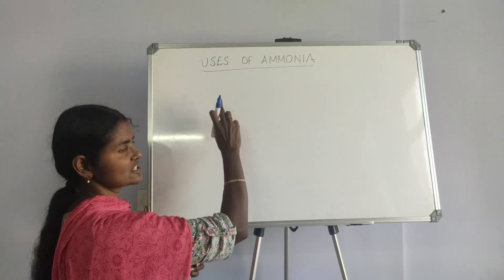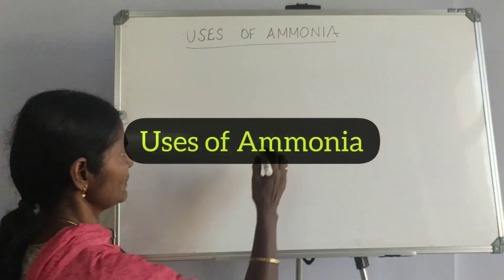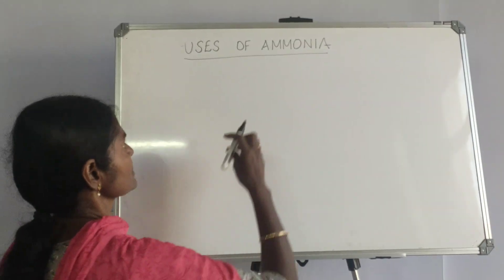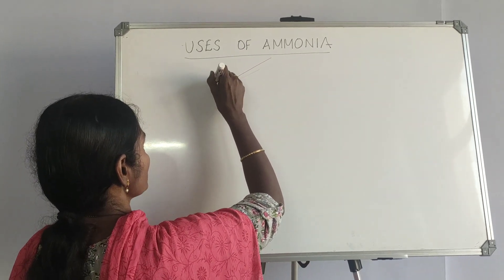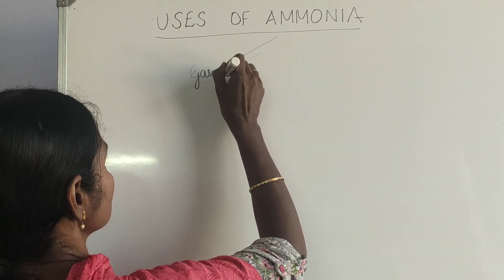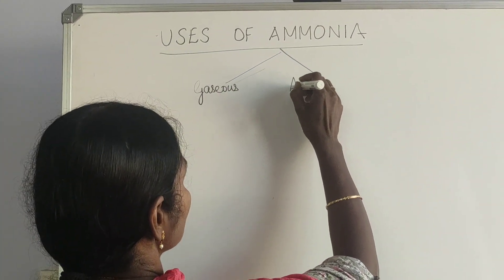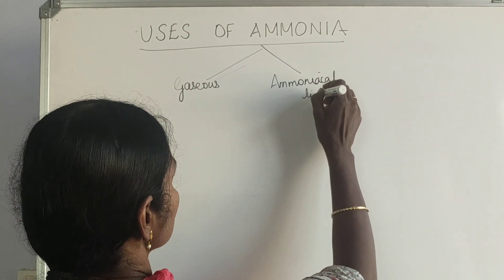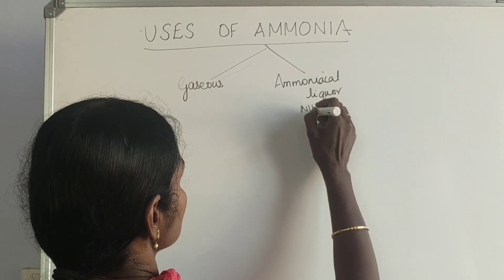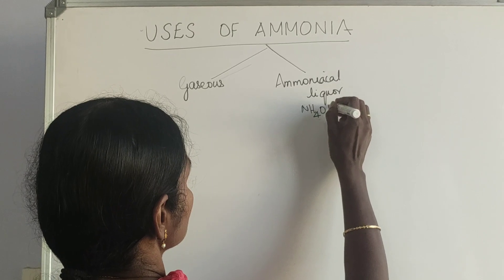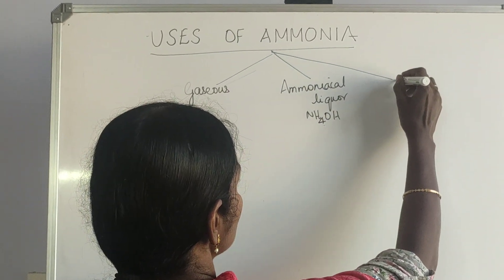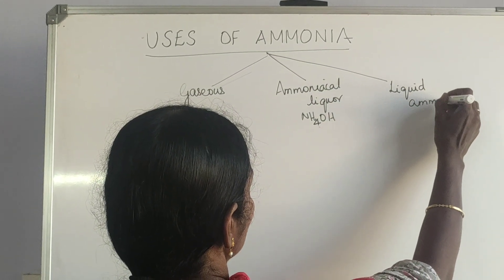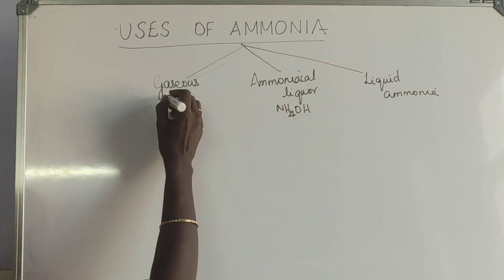Now we move on to the last part of the chapter — the uses of ammonia. Ammonia can be present either in the gaseous form, or as ammoniacal liquor which is ammonium hydroxide, or as liquefied ammonia. All three have different uses.